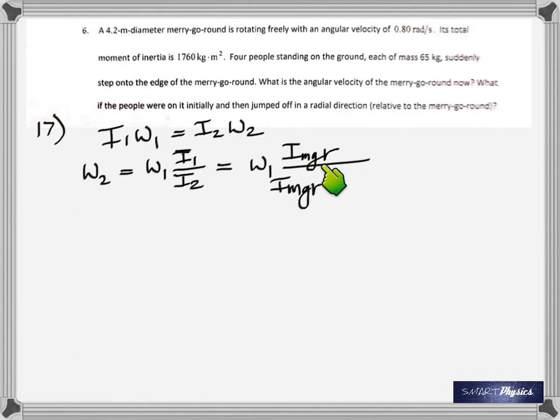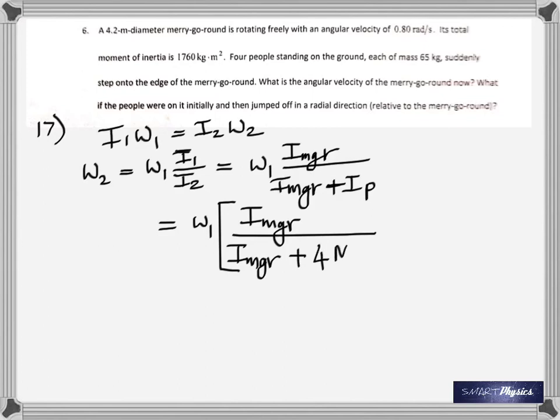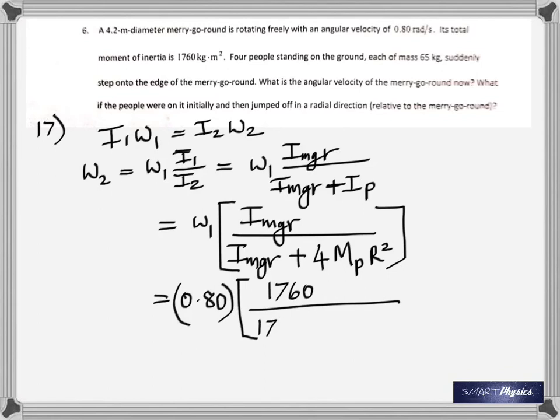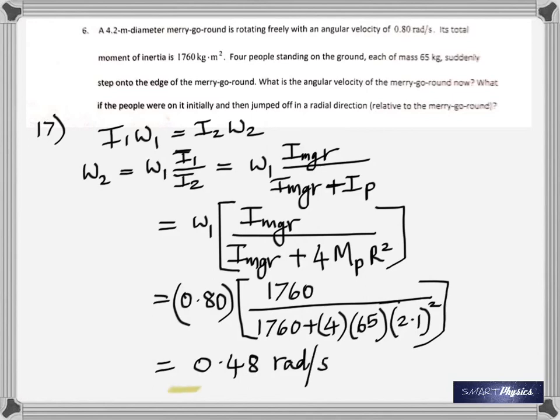That's the merry-go-round plus the moment of inertia of the people. There's only a little bit of math there, nothing else. Four times, because there are four people involved. The merry-go-round has 1760 plus four times the mass of each person, which is 65 kilograms, times the square of the radius. And the answer is 0.48 radians per second.